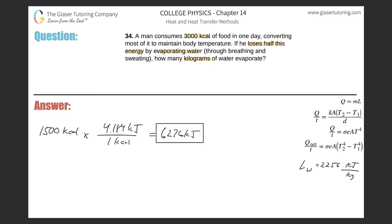Now we're talking about evaporation, so we're going to use the heat transfer formula that involves changes of phase. The heat necessary to change phase of an object equals the mass of that object multiplied by the latent heat of fusion or vaporization, depending on whether you're talking about solid to liquid, liquid to solid, or liquid to gas and gas to liquid.